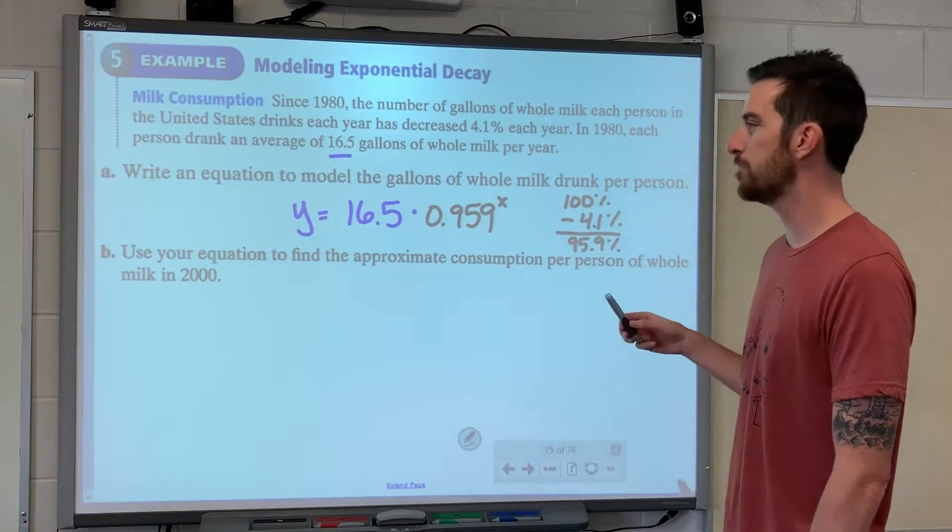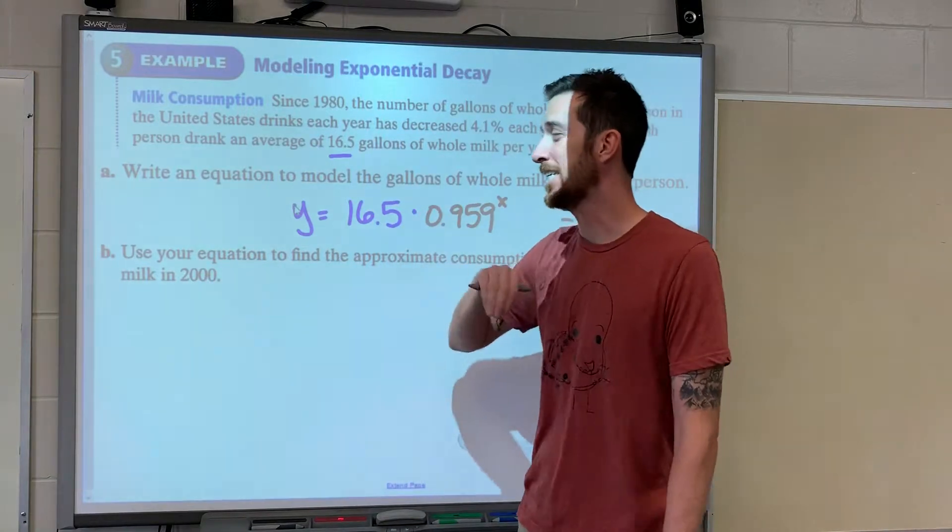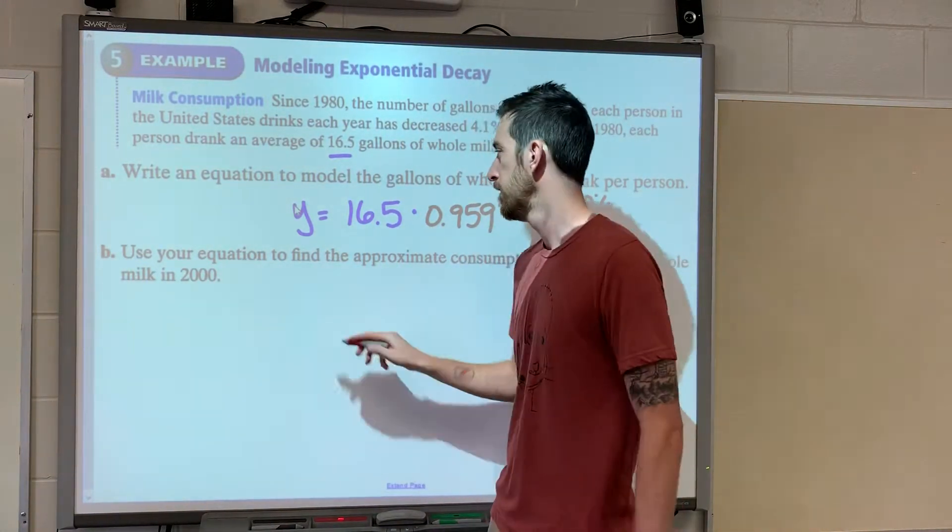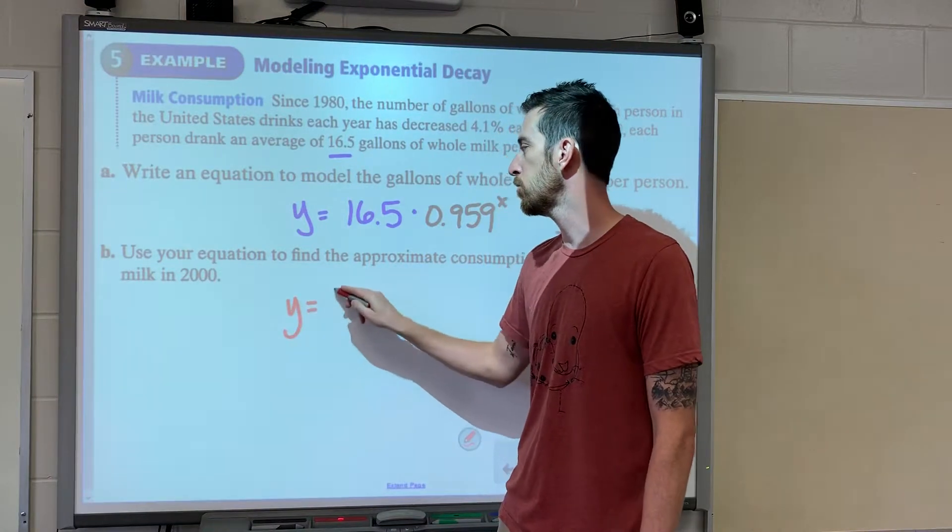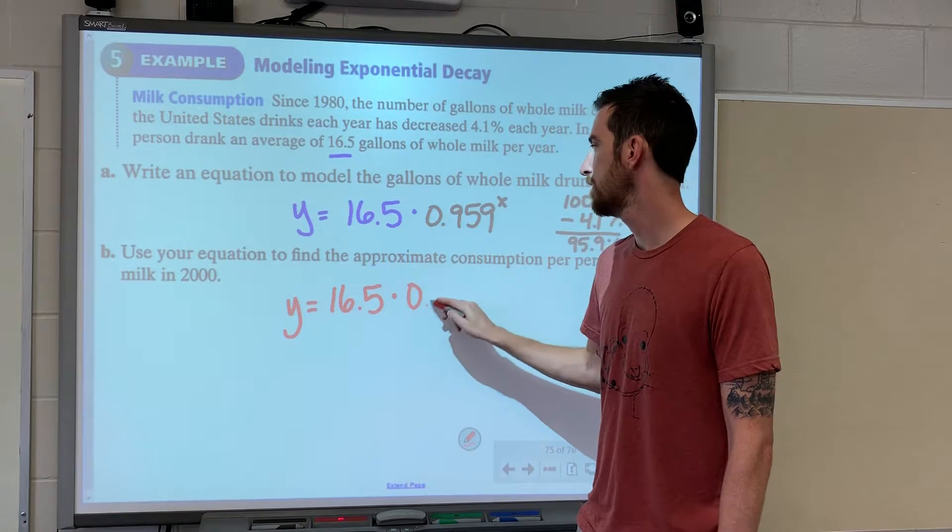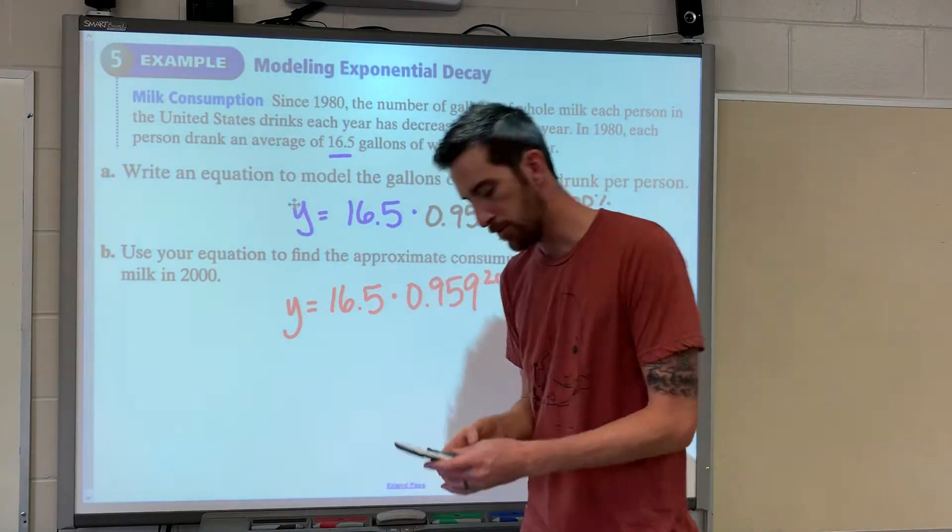Use your equation to find the approximate consumption per person of whole milk in 2000. How many years passed from 1980 to the year 2000? 20 years. So we're going to be substituting in 20 for our x. 0.959 to the 20th power.